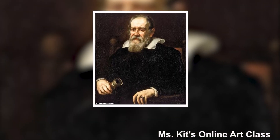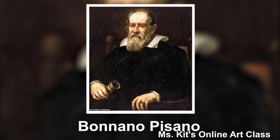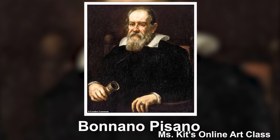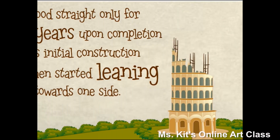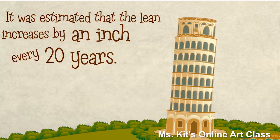This tower was originally designed by Italian architect Bonanno Pisano. It stood straight only for five years upon completion of its initial construction, and then started leaning towards one side. It was estimated that the lean increases by an inch every 20 years.